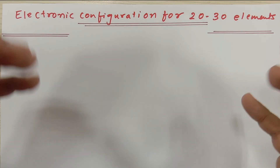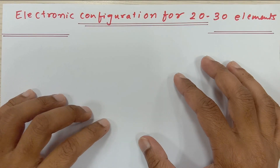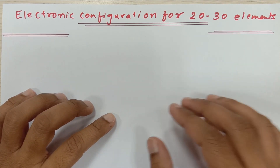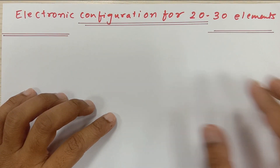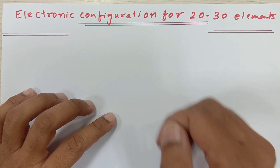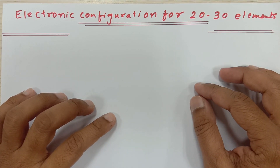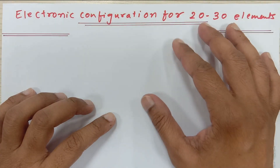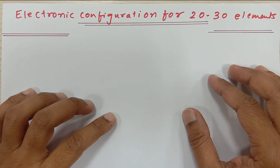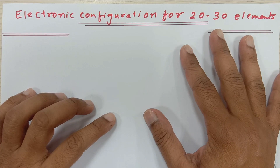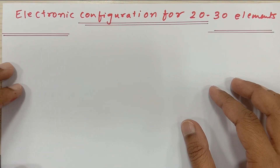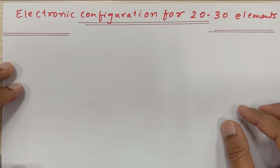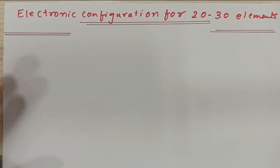This part is highly confusing for grade 7, 8, and 9 students, so I have decided to make a video on that. Before watching this video, I have given a link in the description for the basic SPDF orbitals for up to grade 9. If you watch that video, this video lecture would be very helpful for you. The link is in the description — kindly check it out.